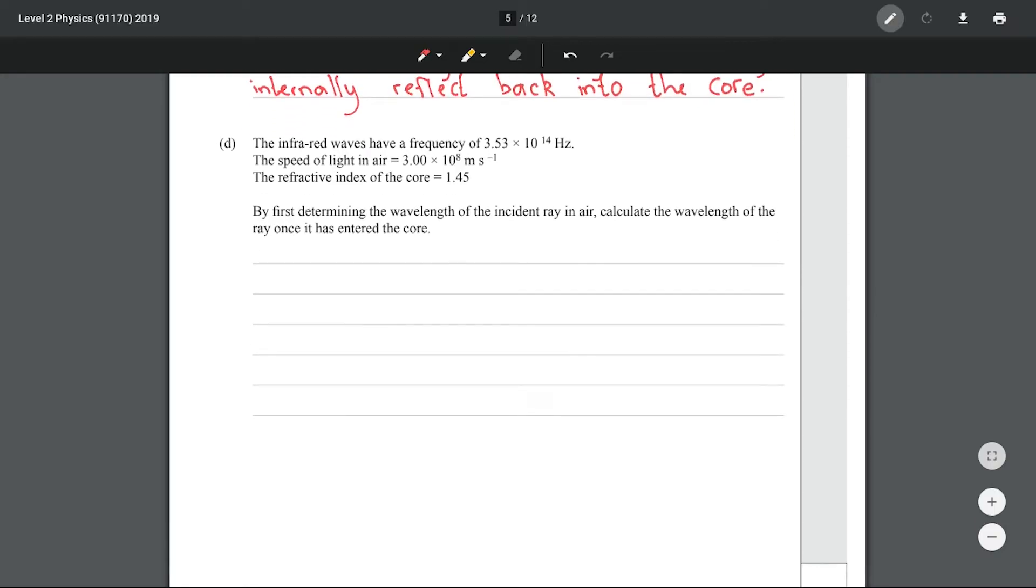The infrared waves have a frequency of 3.53 times 10 to the 14. The speed of light in air is that, the refractive index of the core is 1.45. By first determining the wavelength of the incident ray in air, calculate the wavelength of the ray once it has entered the core. Let's write down what we have. They don't explicitly give us the refractive index of air, but given that the velocity is 3 times 10 to the 8, we can infer that it is of course 1.